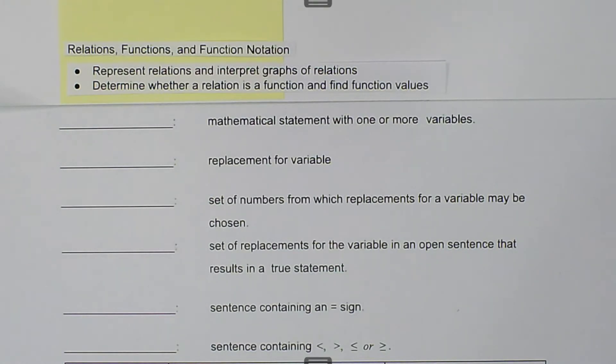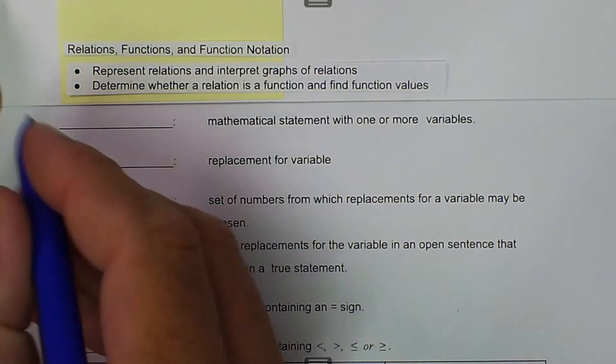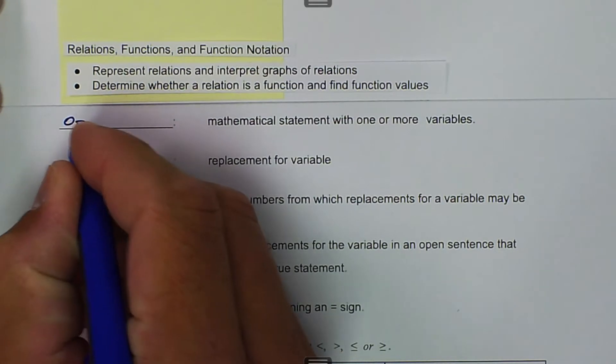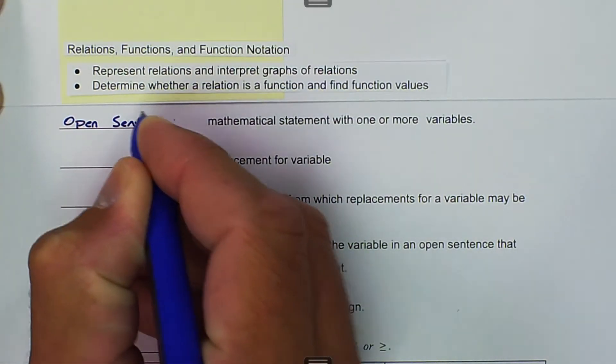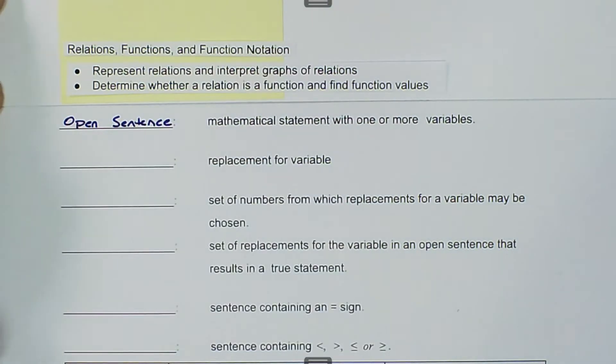So in order to do that, first we have to talk about a few things. An open sentence is a mathematical statement with one or more variables.